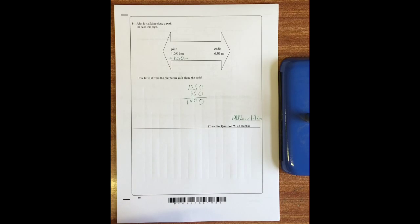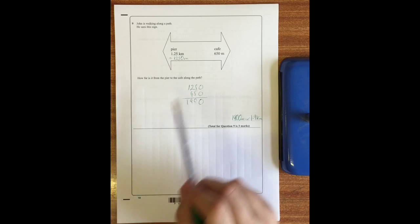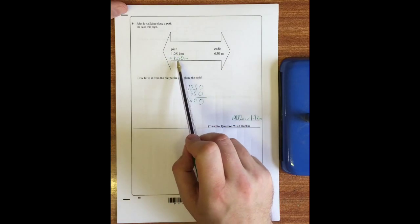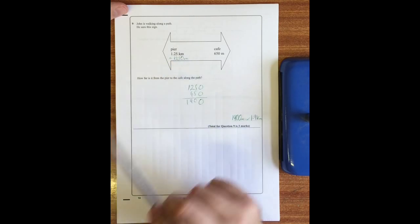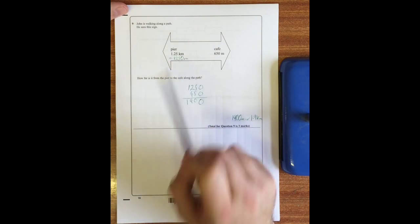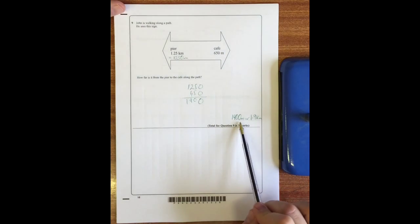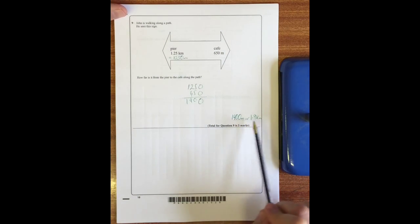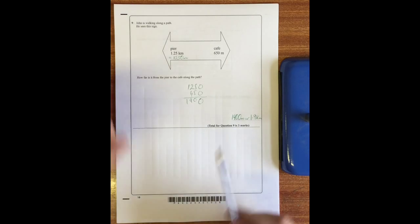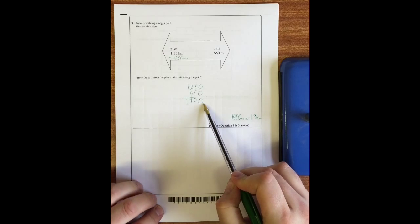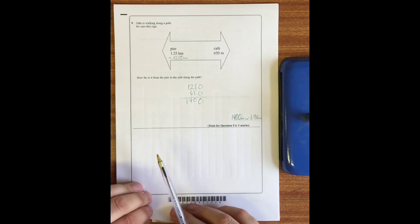Question nine: John is walking along the path and sees this sign. How far is it from the pier to the cafe along this path? Well if it's 650 meters to the cafe and 1.25 kilometers - which if we times by a thousand because it's a thousand meters in a kilometer is 1250 meters - if we add those two distances together we'll get the distance between the two. So add those together, it's 1900 meters or 1.9 kilometers, either is fine. There's one mark for converting either of those to meters or kilometers, one mark for adding them up, and one mark for putting your final answer.